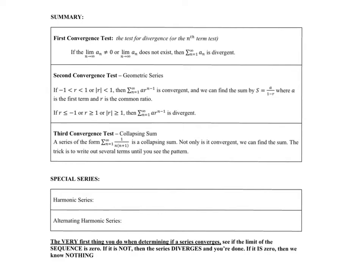Our very first test is the test for divergence. It might be called the limit test, or it could be called the nth term test. What you're doing is taking the limit as n goes to infinity. If you have a value that is not zero, then the particular series is divergent, because you're continuing to add values as you analyze the nth term. As you add more and more values, those values are going to increase or decrease the sum of the series, or possibly cause it to alternate.